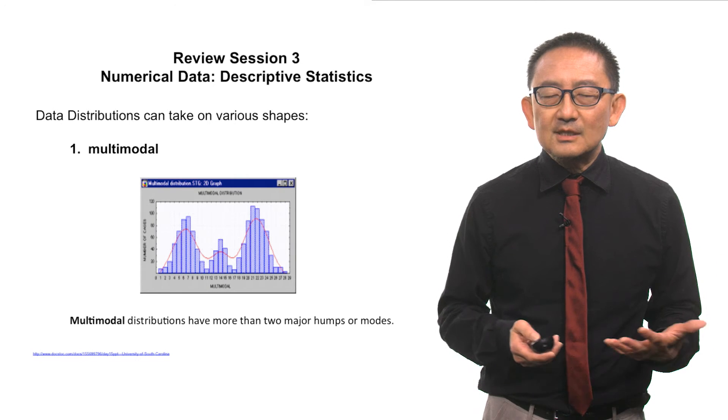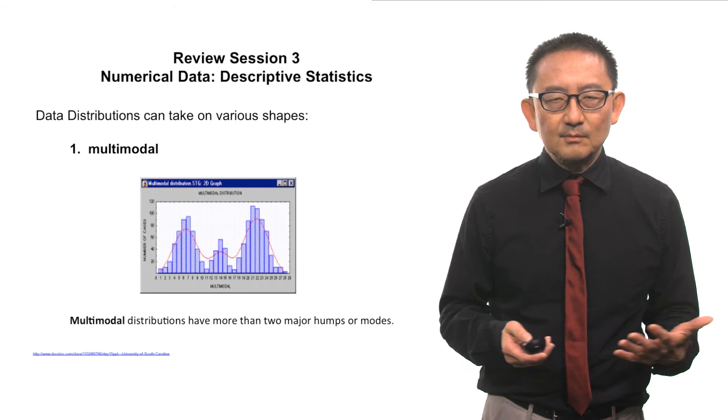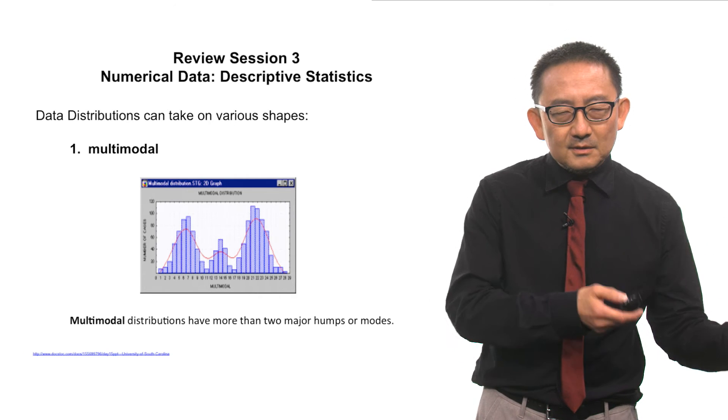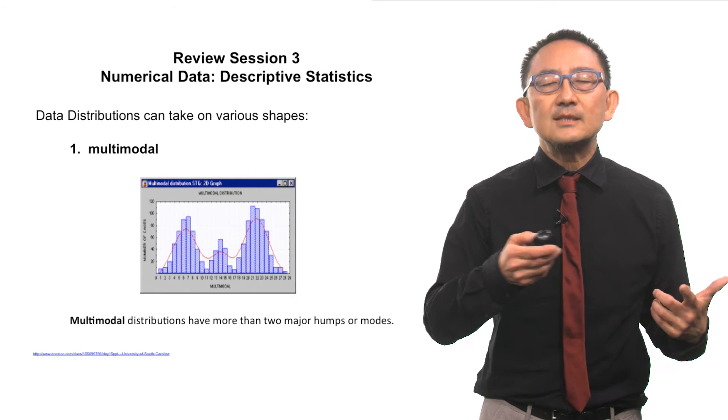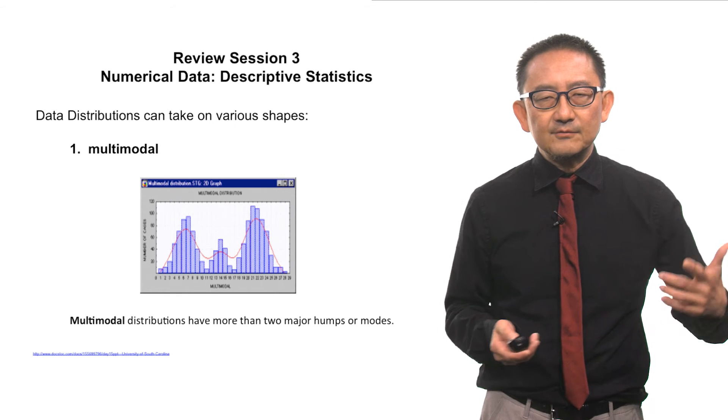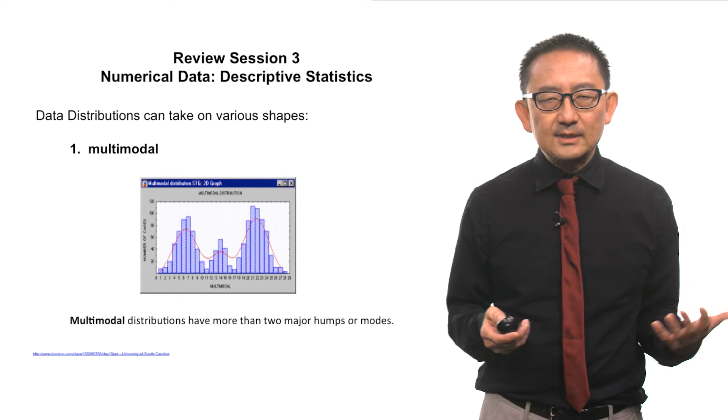Here's an example of a multimodal distribution, more than two peaks. Now you'll notice that the peaks aren't exactly of the same height, but that's okay. We see clearly that there are three different peaks within this graph.